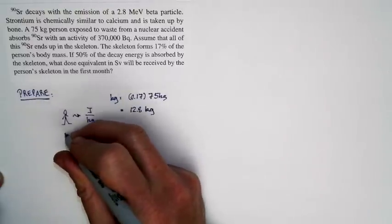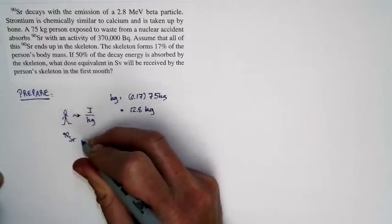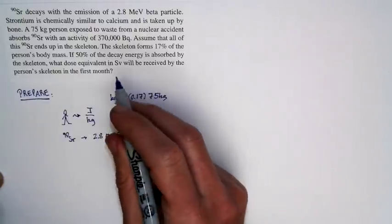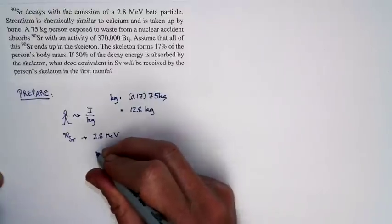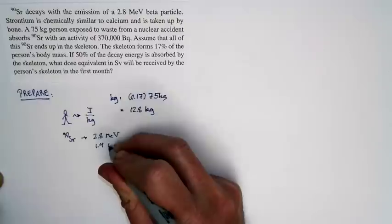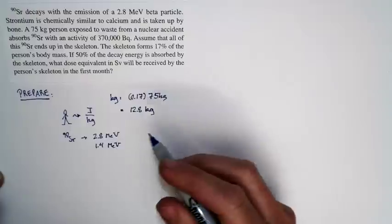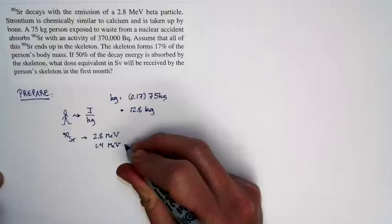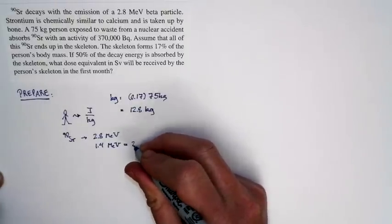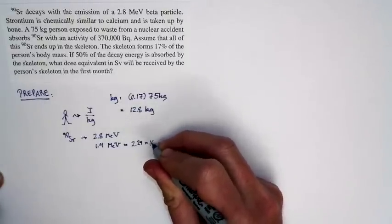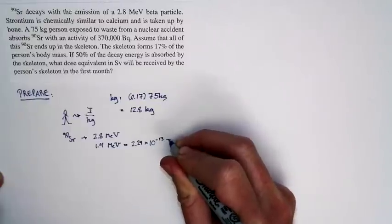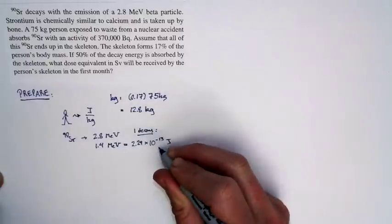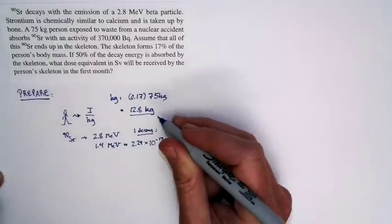Now, strontium-90, when it decays, it emits a beta particle with an energy of 2.8 mega electron volts. We assume that 50% of this is absorbed by the skeleton, so for each decay there's 1.4 mega electron volts that's absorbed by the skeleton. But since grays is in joules per kilogram, I don't want this in mega electron volts, I want this in joules. So I'm going to convert it to joules, and if I do that I get 2.24 times 10 to the negative 13th joules.